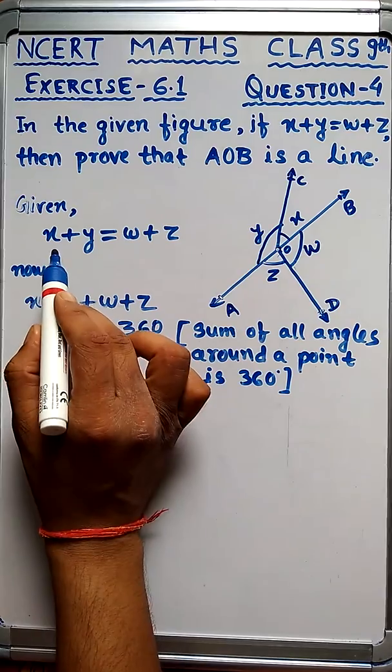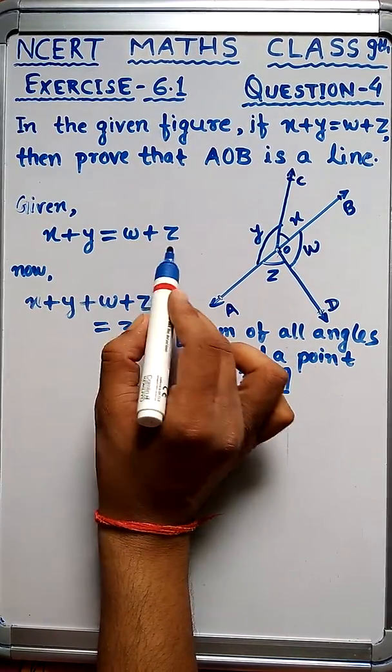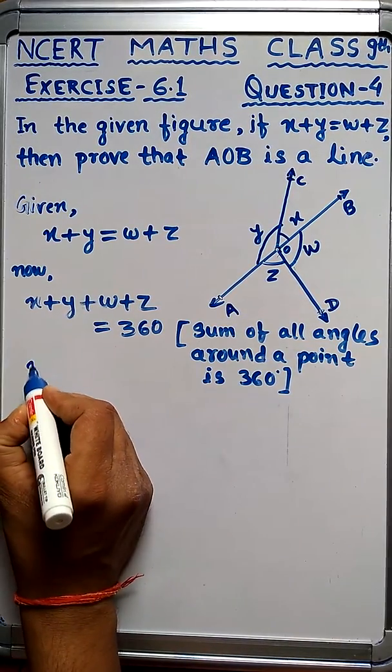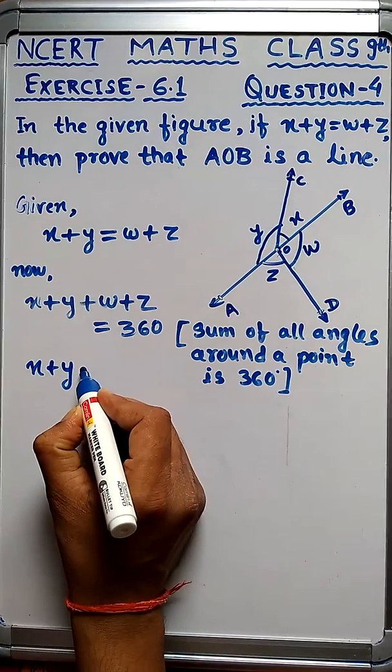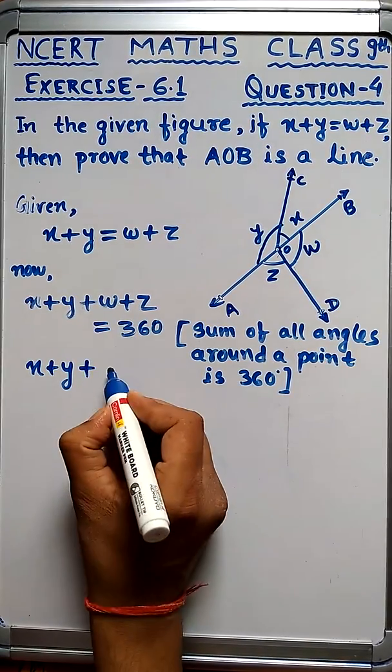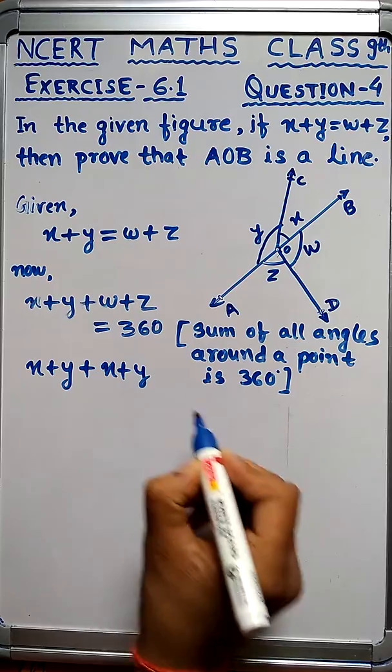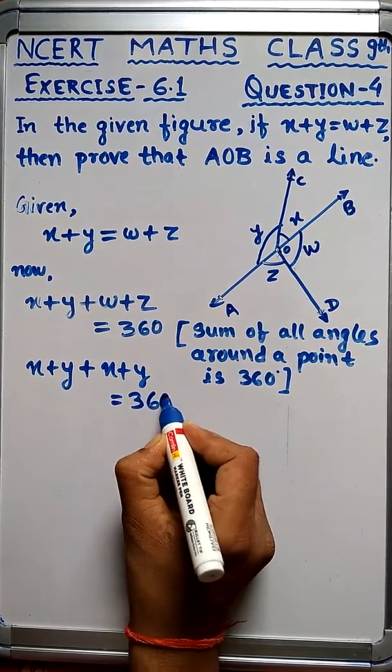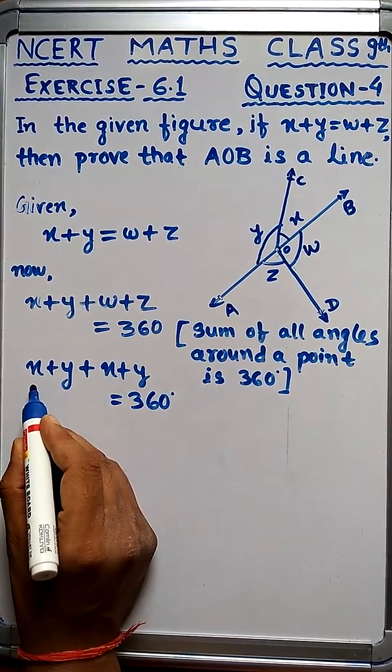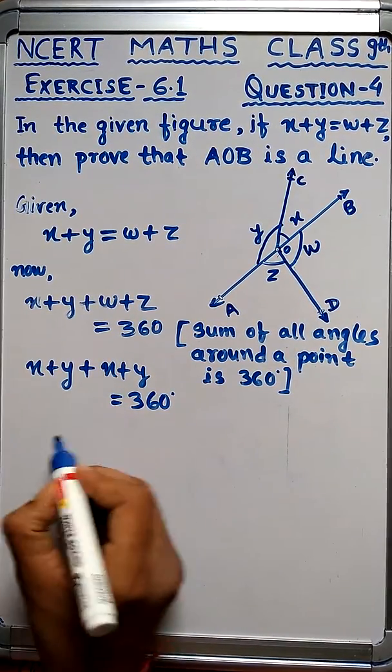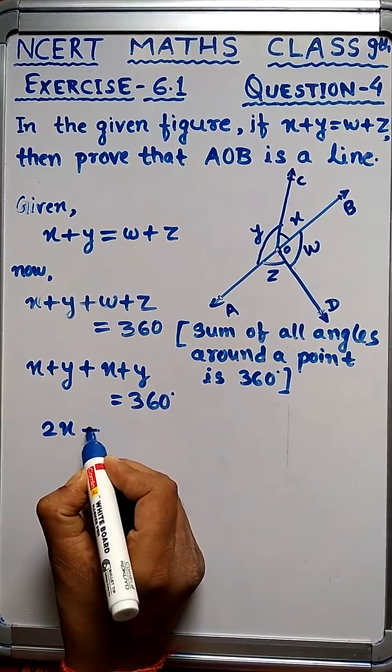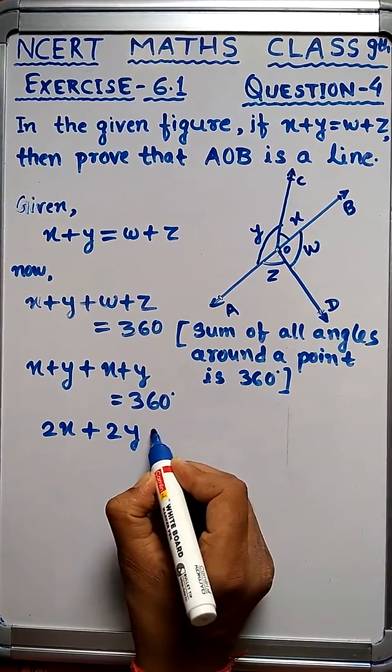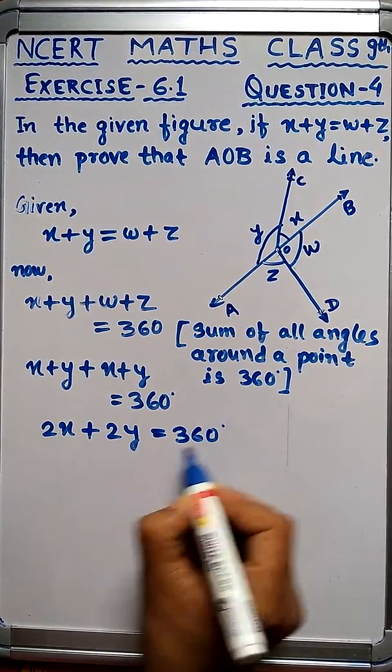Now, x plus y equals w plus z as given. So we can substitute w plus z with x plus y. Therefore, x plus y plus x plus y equals 360 degrees, which gives us 2x plus 2y equals 360 degrees.